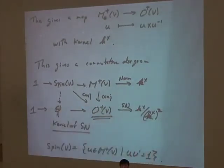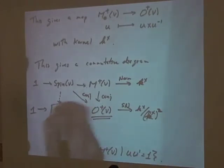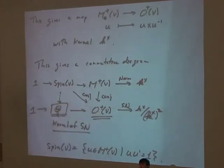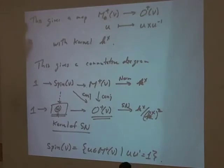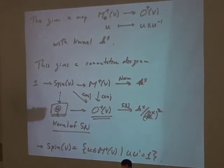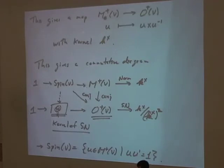The spin group is a double cover of the special orthogonal group. However, the map from the spin group doesn't surject onto all of the special orthogonal group — it only maps to the spinner norm kernel θ. The obstruction comes from square classes: if u has non-trivial spinner norm, we can't rescale it to norm 1 over a general field, so there are square class obstructions preventing full surjectivity.